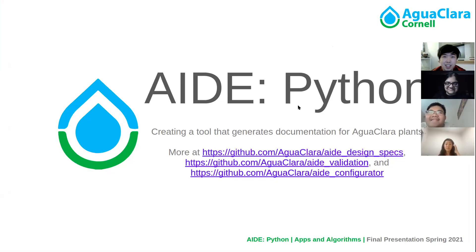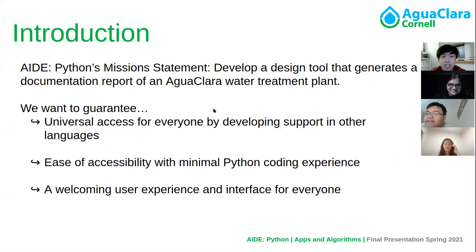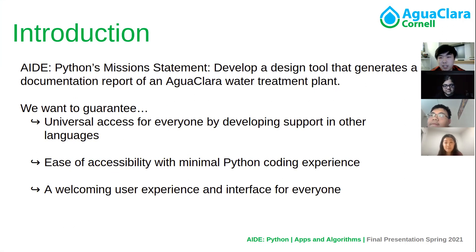This is AidPython and we are doing the final presentation for AidPython. AidPython's mission is to design tools to help better integrate both the software side and the hardware side of AgaClora's software as well as AgaClora's plants. We want to do this to make better documentation reports and ease access to understanding how the performance of the water treatment plant is.